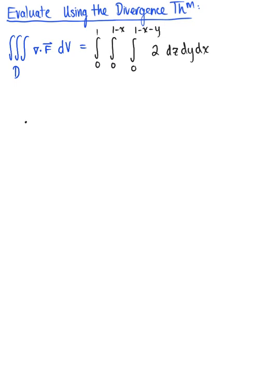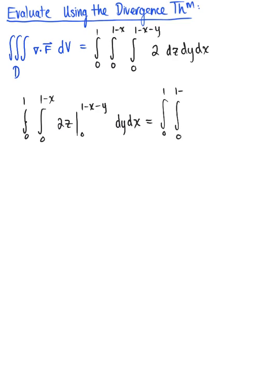Integrating with respect to z first, 2z evaluated from 0 to 1 minus x minus y gives us the integral from 0 to 1, the integral from 0 to 1 minus x of 2 multiplied by (1 minus x minus y) dy dx.